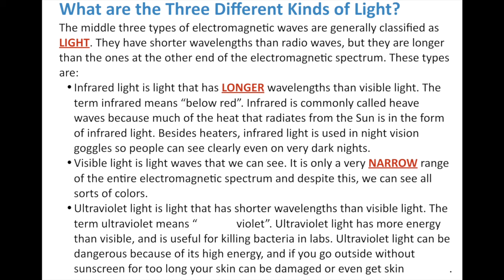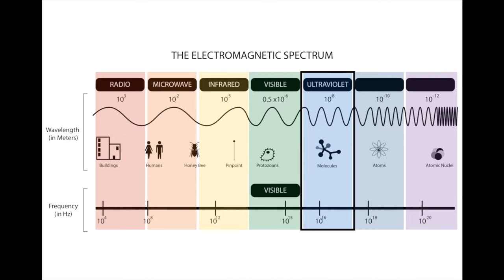In terms of light, we also have ultraviolet light — that's light with shorter wavelengths than visible light. The term ultraviolet means 'above violet.' Ultraviolet light has way more energy than visible light and it's useful for killing bacteria in labs and keeping things sanitary. It can be dangerous because of its high energy — ultraviolet light gives you sunburn, and your skin can be damaged and even get skin cancer. Black lights are an example of ultraviolet light. The wavelength of an ultraviolet ray is only about the size of a molecule.